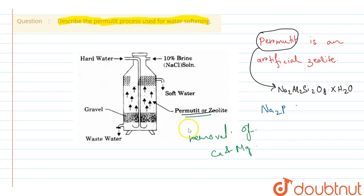When no longer active, what happens? The permutate is regenerated by running a concentrated solution of brine.